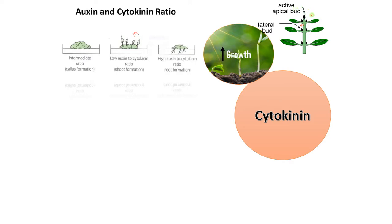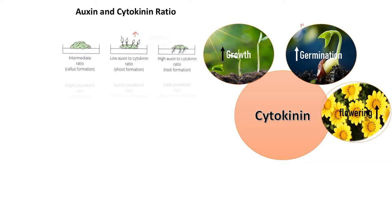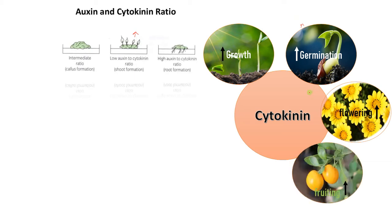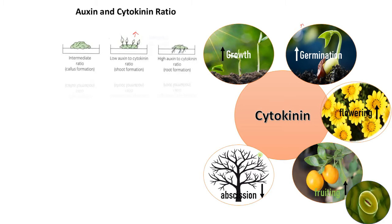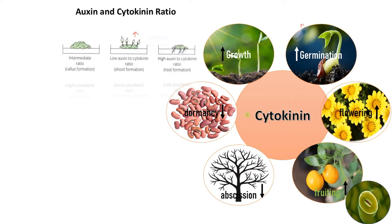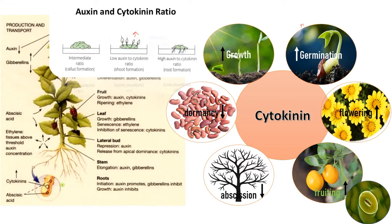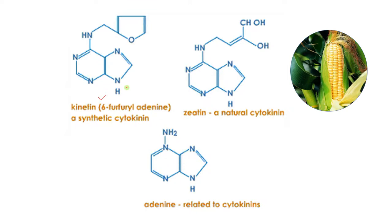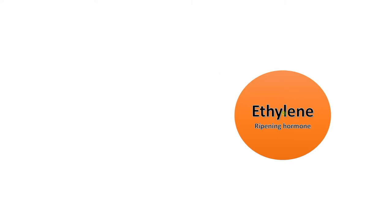Cytokinin favors germination, promotes flowering and fruiting in many plants, often causes opening of stomata, inhibits abscission and senescence, and breaks dormancy. Cytokinin is synthesized in roots, so its transport is from bottom to top — called acropetal transport. Kinetin is a synthetic cytokinin, whereas zeatin is a natural cytokinin derived from maize.